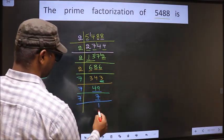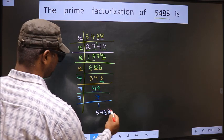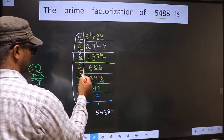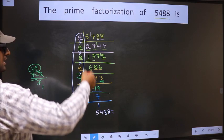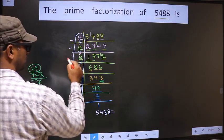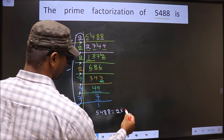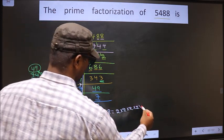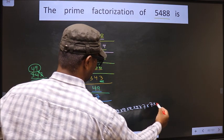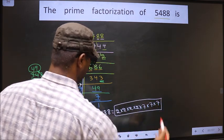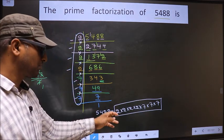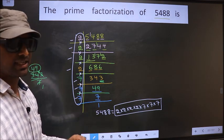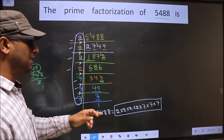So the prime factorization of 5,488 is the product of these numbers. How many times did we get 2? 1, 2, 3, 4 — so it is 2×2×2×2. We got 7 three times, so ×7×7×7. This is the prime factorization of 5,488, also called the product of prime numbers of 5,488.